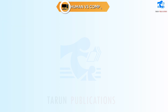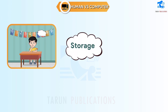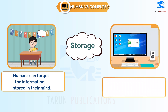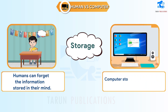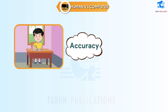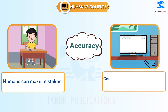Human vs. Computer. Storage: Humans can forget the information stored in their mind. Computers store a large amount of information and never forget it. Accuracy: Humans can make mistakes, but computers do not make mistakes.